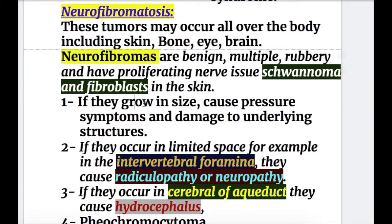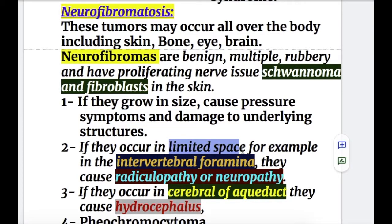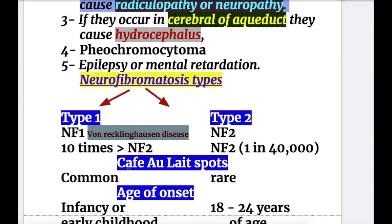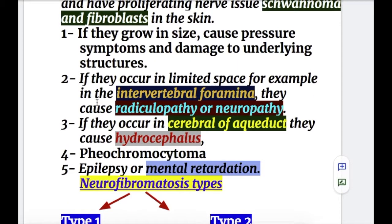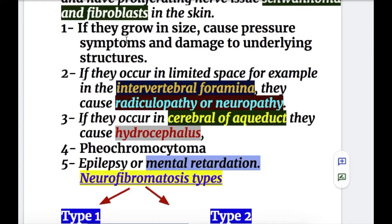Number one, neurofibromas grow in size and cause pressure symptoms, damaging underlying structures. Number two, if they occur in a limited space such as the intervertebral foramina, they cause radiculopathy or neuropathy. Number three, if they occur in the cerebral aqueduct, they cause hydrocephalus. Number four, if they occur in the adrenal medulla, they cause pheochromocytoma. Number five, if they occur in nerve tissue, they may cause epilepsy or mental retardation.